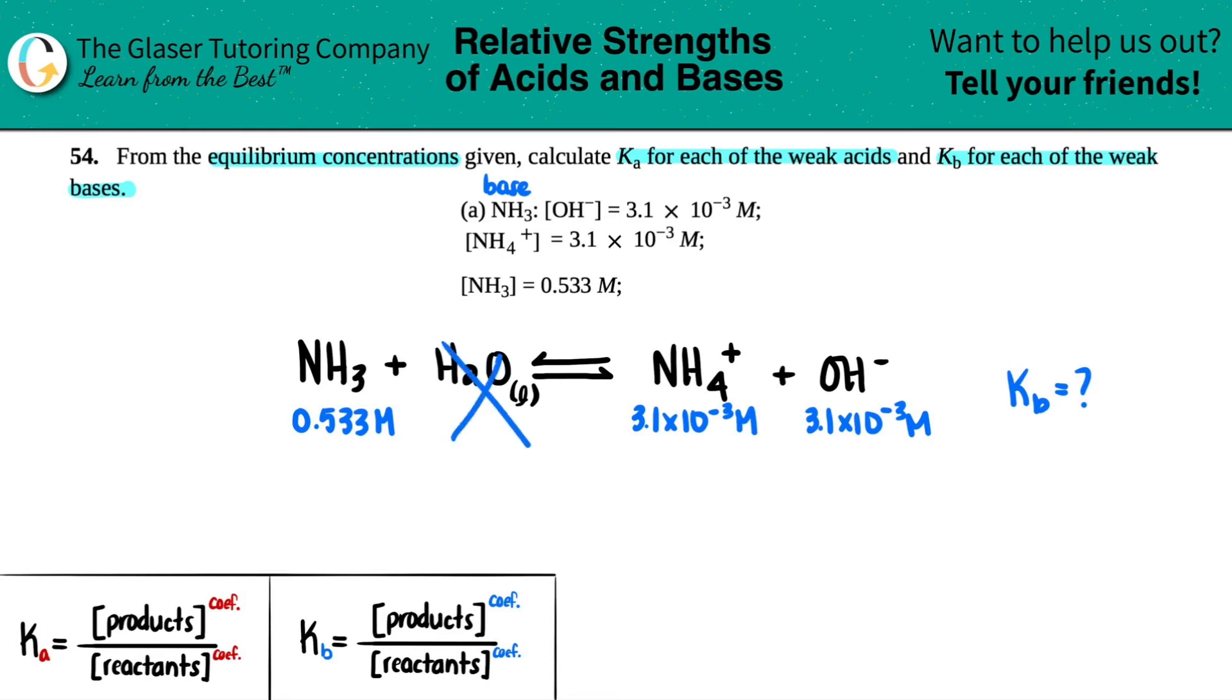So let's write our equation. Kb equals products divided by reactants. Remember, when you have two products they're going to be multiplied together in my Kb expression, not added. We have NH4+ times OH- divided by NH3.